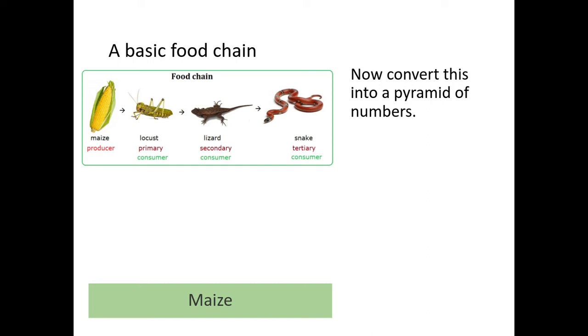If we convert this into a pyramid of numbers, we'd have maize, locust, lizard and snake in that order. The numbers would decrease as you go further up the pyramid of numbers or through the food chain.